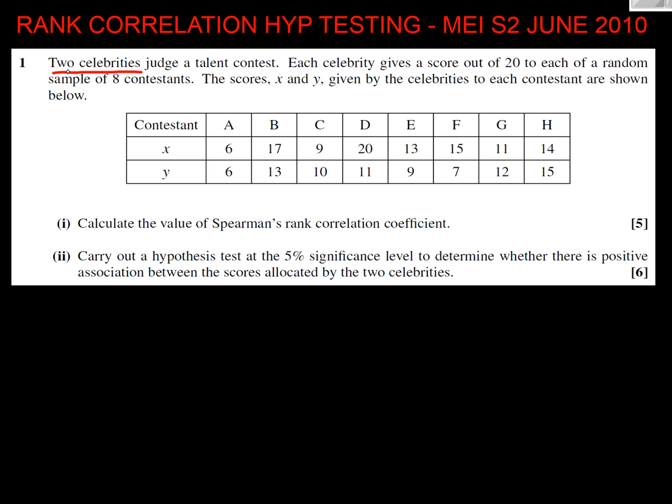Two celebrities judge a talent contest. Each celebrity scores out of 20 to each of a random sample of 8 contestants. The scores X and Y given by the celebrities are shown below. So here's our table, here's our 8 contestants A to H, and here's the scores of X and Y.